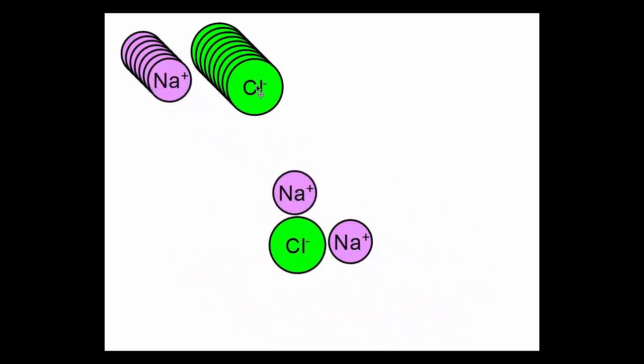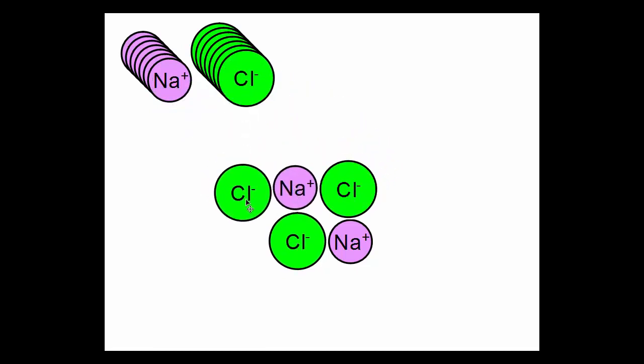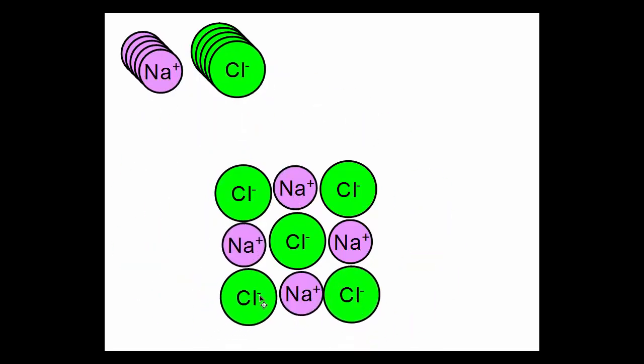It also means that if other ions approach the original ion, they can also be attracted to it, and new bonds can be formed, as long as the positive and negative ions are arranged alternately.